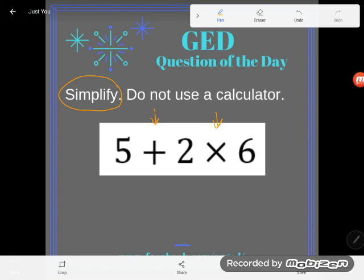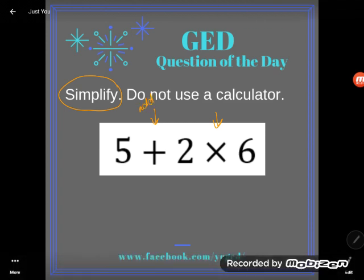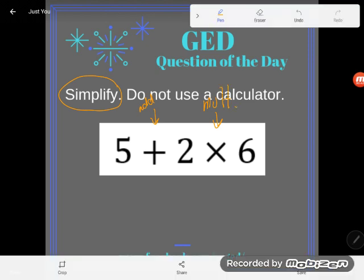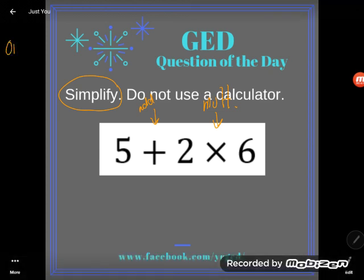And then it says do not use a calculator. So I just need to remind you anytime you see more than one operation here, so see how I see both addition and multiplication, anytime there's more than one operation in an expression you are going to fall under a rule of math known as the order of operations.